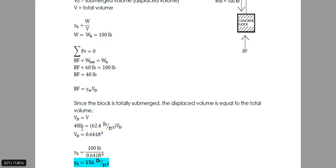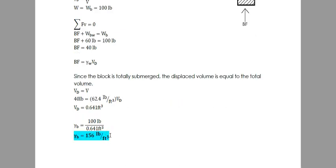From this equation, 40 pounds, our buoyant force, equals gamma of the water. For fresh water, that's 62.4 pounds per cubic foot, times the displaced volume. Our displaced volume is 0.641 cubic feet. Displaced volume equals total volume. That's what we need to solve for the unit weight of the block.